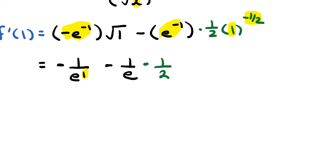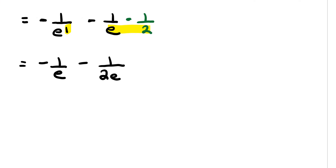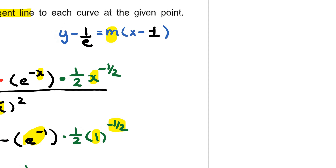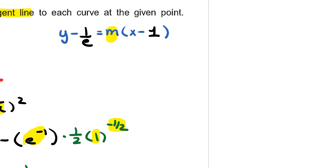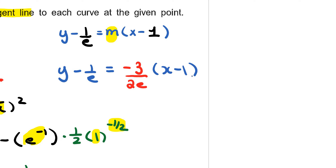So e to the power of 1 here — that's just negative 1 over e — minus 1 over 2e. We multiply the top and bottom by 2, so we have negative 2 minus 1, which gives negative 3, divided by 2e. That is my derivative value when x equals 1. Going back to my tangent line, my final answer is y minus 1 over e equals negative 3 over 2e times bracket x minus 1.